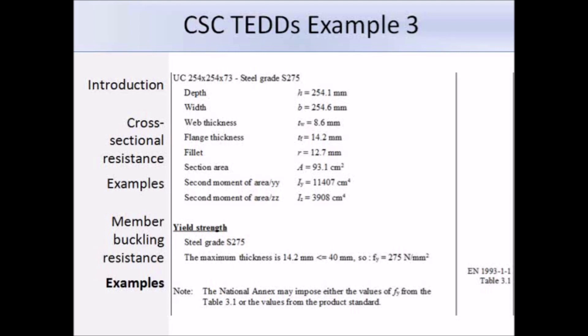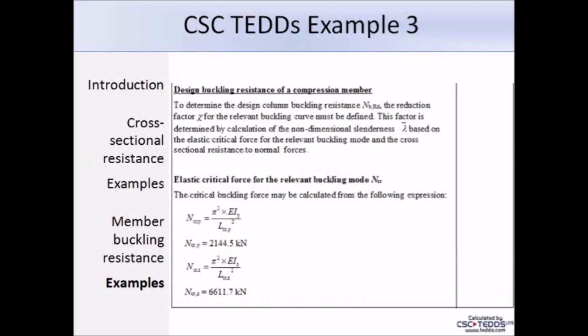Now we calculate the design buckling resistance. The elastic critical buckling force NCR equals π² × E × I divided by the effective length squared, calculated for both axes. We get NCR,y = 2144.5 kN and NCR,z = 6611.7 kN. The column is restrained in the y-direction, so it makes sense that the critical buckling force about the y-axis is considerably less — almost a third of the z-axis value.